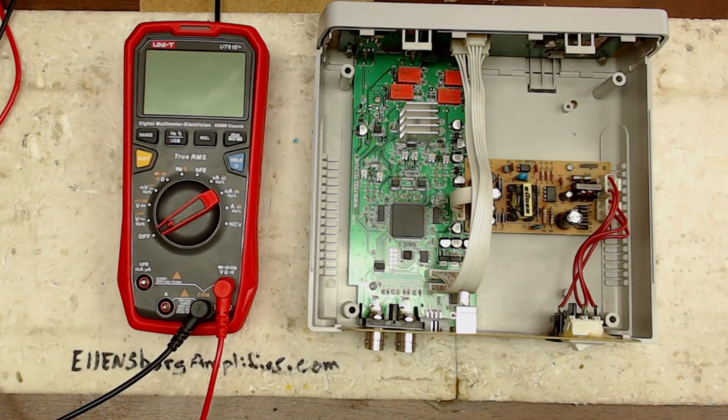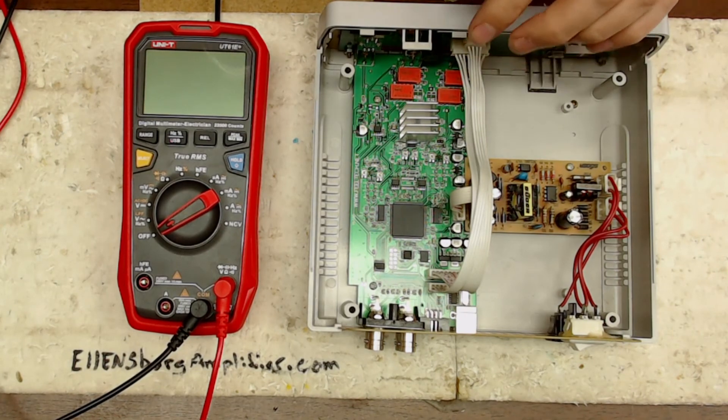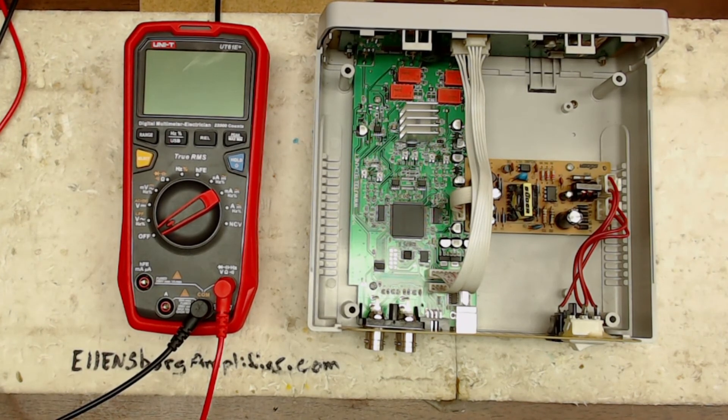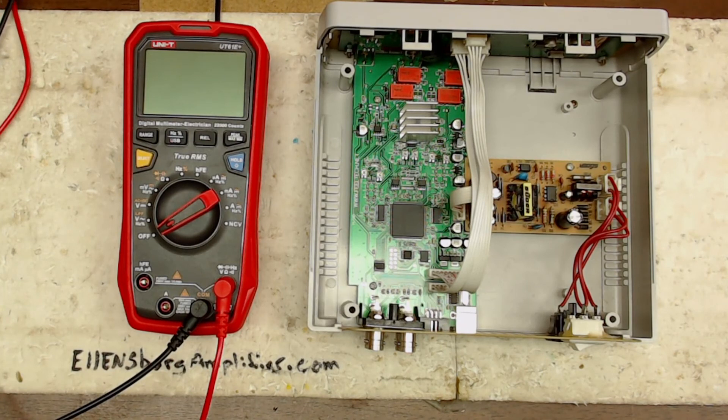So that was my quick rundown of finding a bad component using resistance, identifying the component, going to what I consider a great resource to identify the component, which then you can pull up the data sheet to verify what you found, which again, that's a great reference.